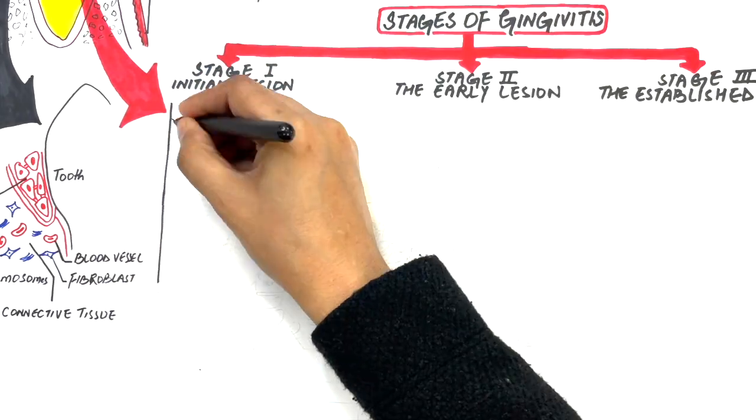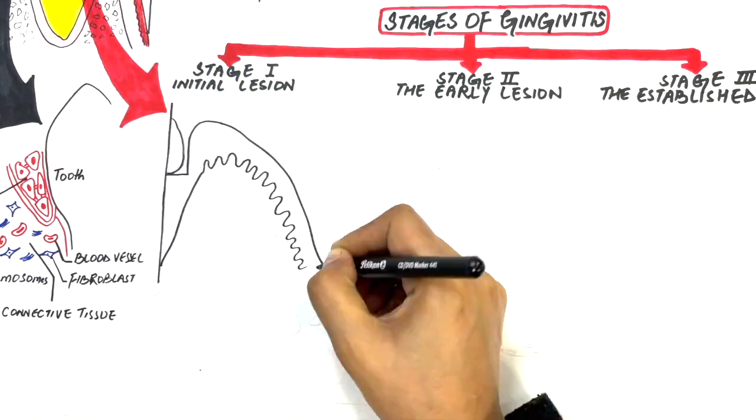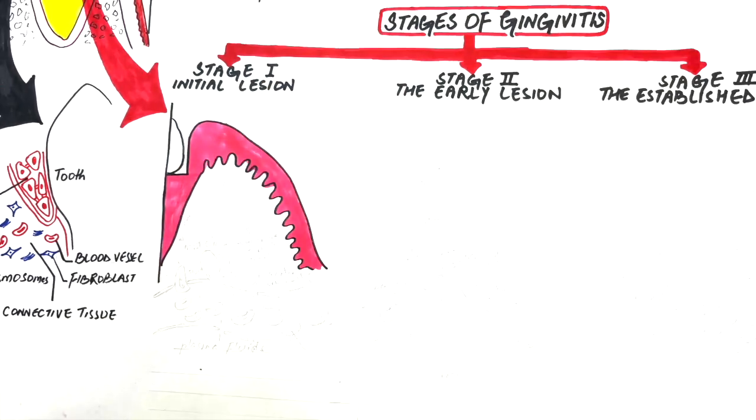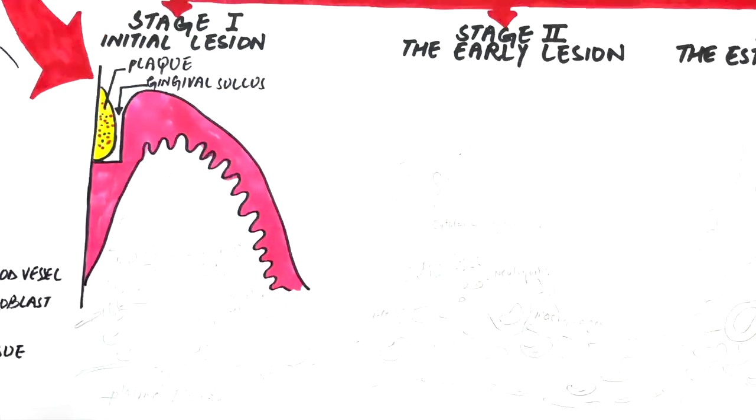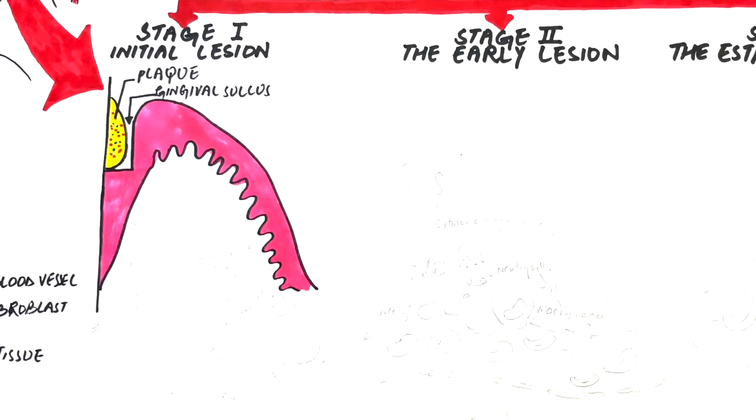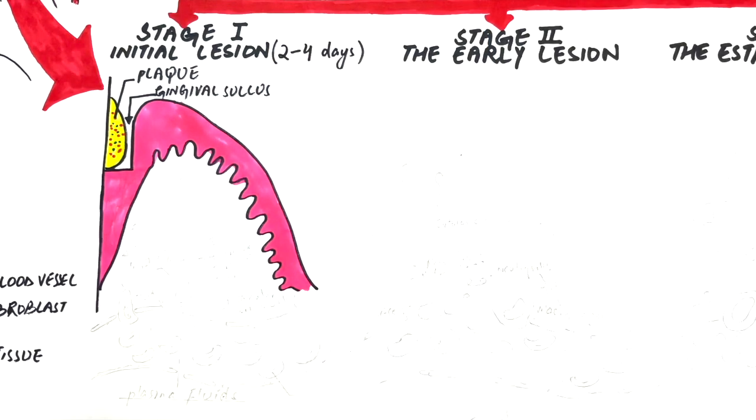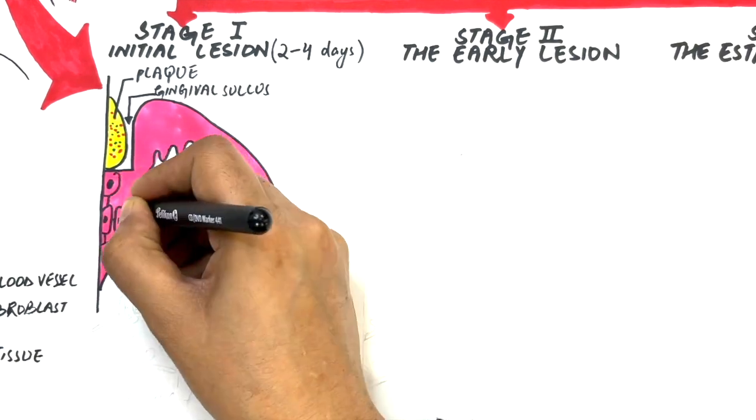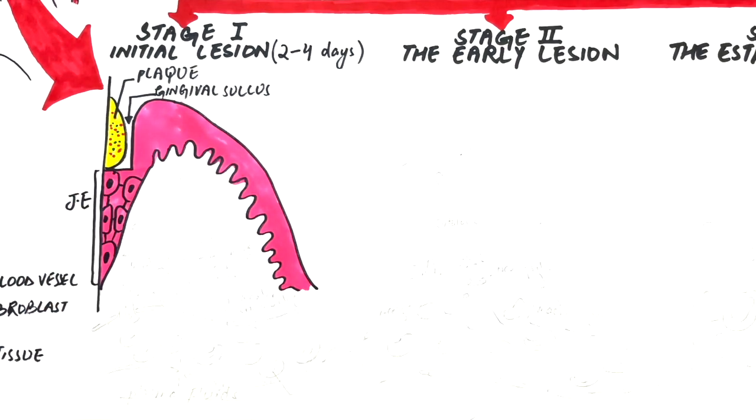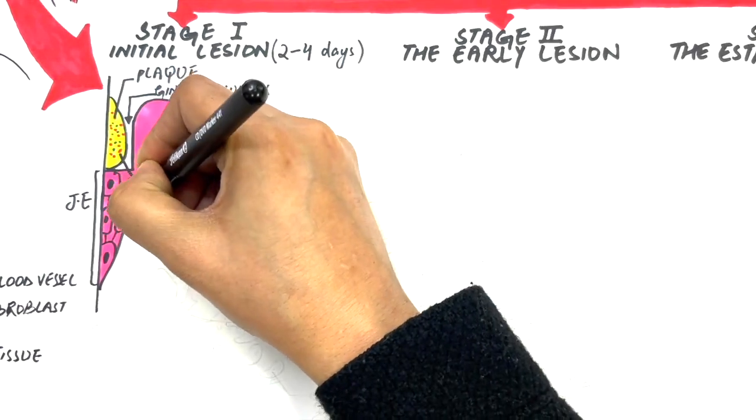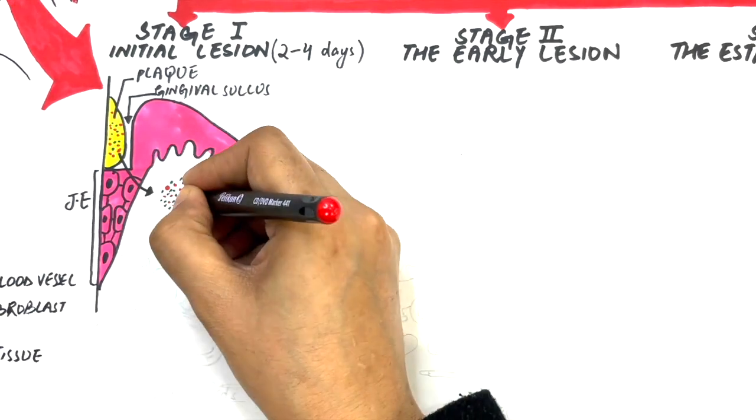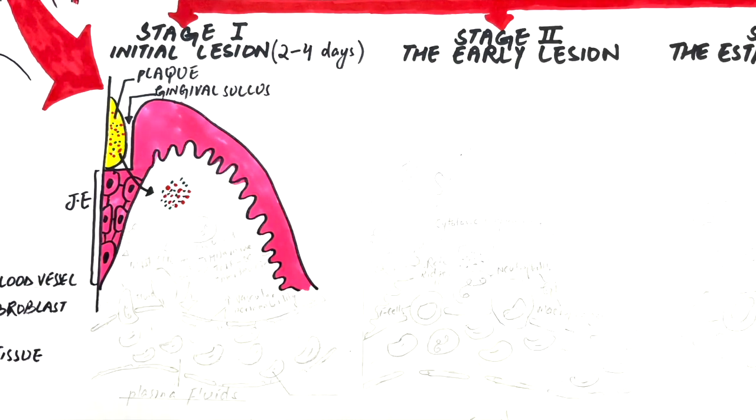Stage 1 of gingivitis is initiated 2 to 4 days after considerable plaque accumulation. During this stage, bacteria present in the accumulated plaque at the base of the teeth release toxins that make their way into the underlying connective tissue through the intercellular gaps present between the cells of the junctional epithelium. Here, the bacterial toxins initiate an inflammatory process by stimulating immune cells within the connective tissue. These immune cells are the mast cells and neutrophils.